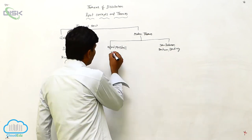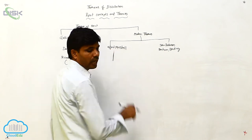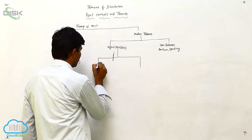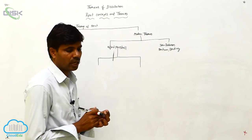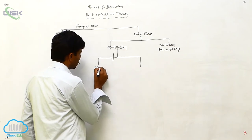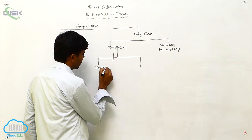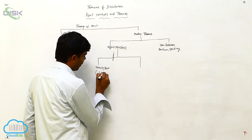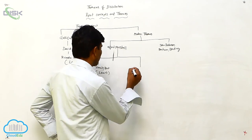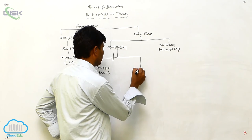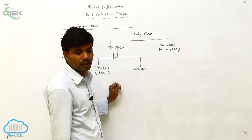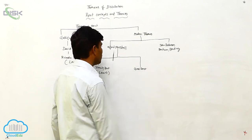Alfred Marshall explains two types of rent: first, scarcity rent — rent arising because land is scarce — and second, quasi rent. These are the two types of rent explained by Marshall.